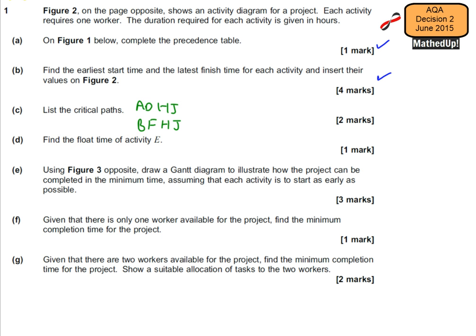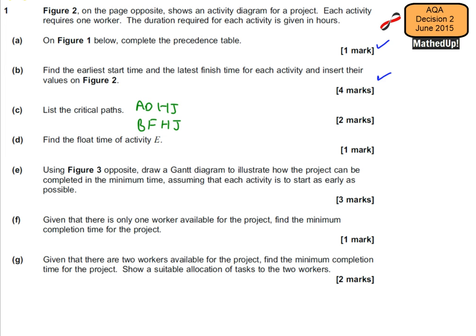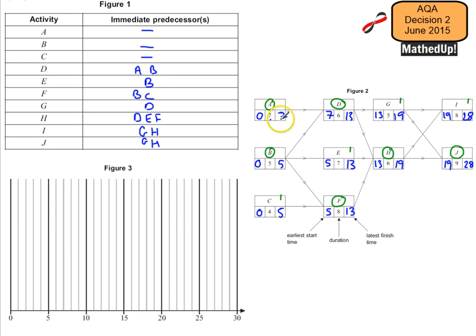Part D says find the float time of activity E. We worked out that activity E has a float of 1, so the float equals 1. Part E says, using figure 3 opposite, draw a Gantt diagram to illustrate how the project can be completed in the minimum time, assuming each activity starts as early as possible. So I'm now going to fill in these values on my Gantt diagram.